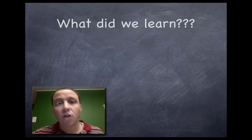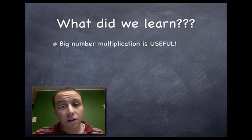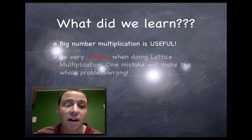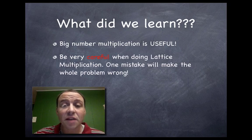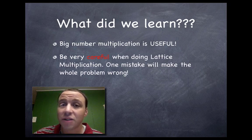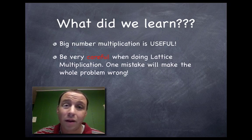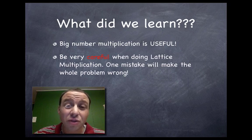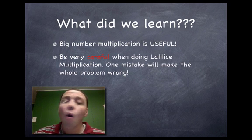But first, let's quickly talk about what we learned again. First, big number multiplication is useful. You can multiply numbers of any size if you know how to do basic single-digit computations. And secondly, if you're using the lattice method, you have to be careful. You must carefully line it up. You must carefully do your computations. One little mistake will screw up your whole problem.